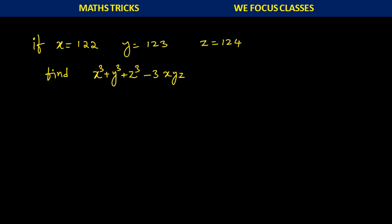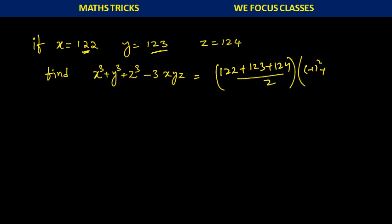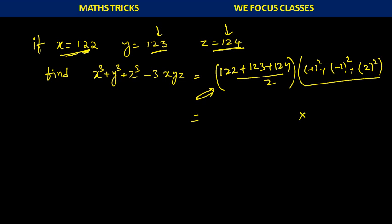Now for our problem: x equals 122, y equals 123, z equals 124. The expression becomes 122 plus 123 plus 124 divided by 2, into (122 minus 123) all square plus (123 minus 124) all square plus (124 minus 122) all square. That is minus 1 all square plus minus 1 all square plus 2 all square, which is 1 plus 1 plus 4, giving 6.